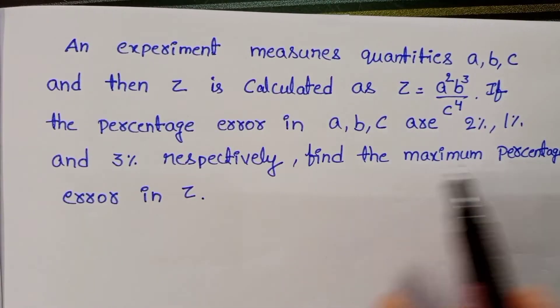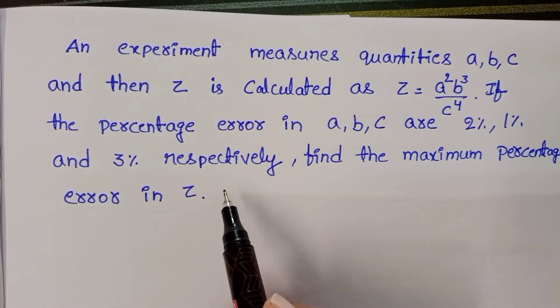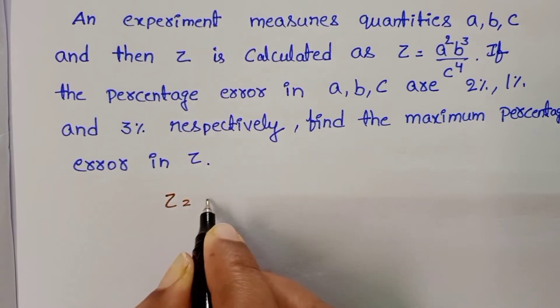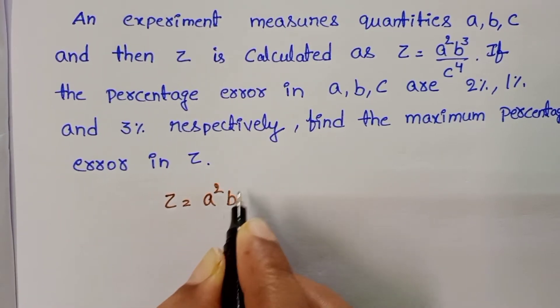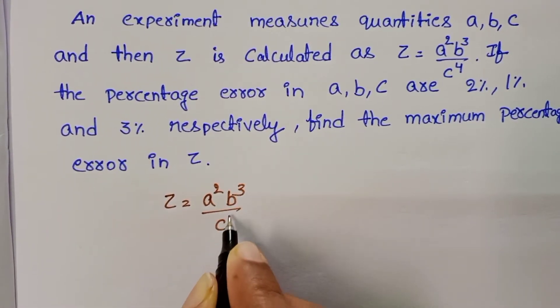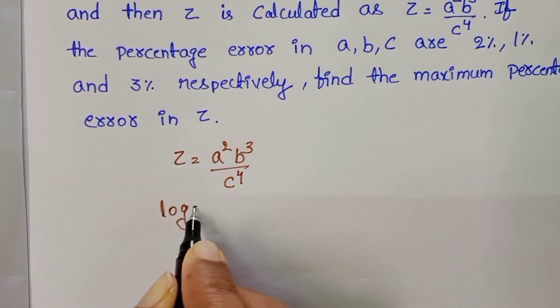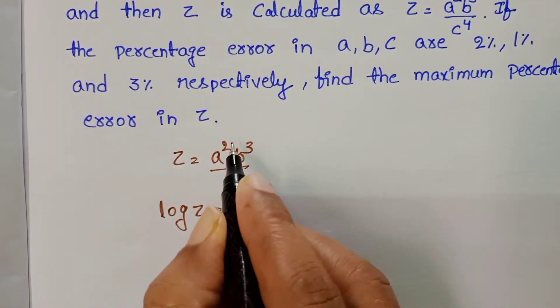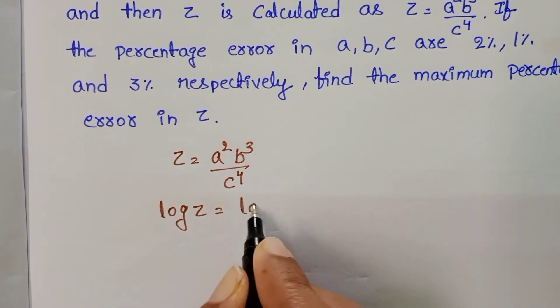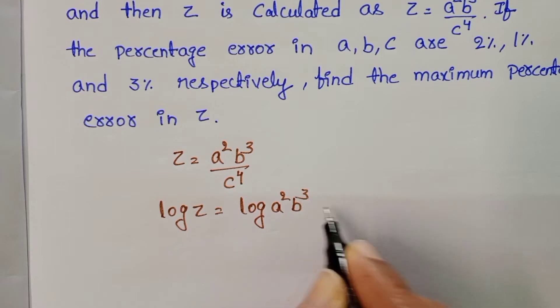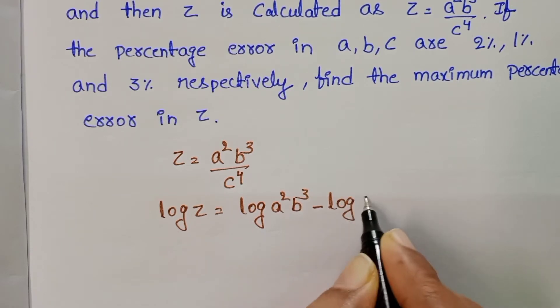find the maximum percentage error in Z. Given Z equals A square B cube by C power 4, take log on both sides. Log Z equals log A square B cube minus log C power 4.